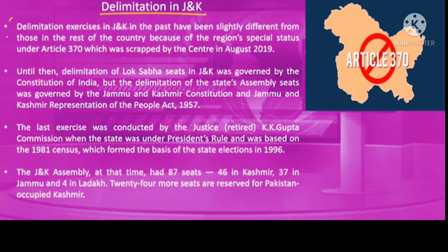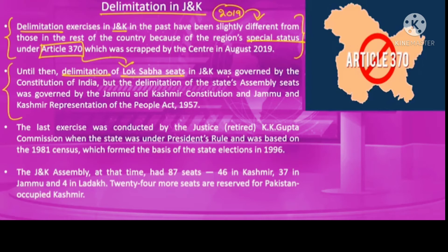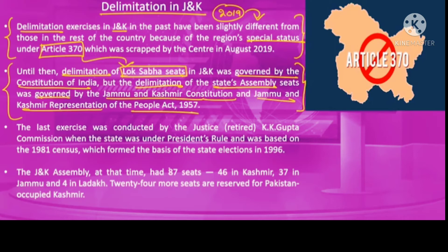Delimitation in J&K before 2019 was slightly different from the rest of India. Prior to August 2019, J&K enjoyed special status under Article 370, and accordingly, the delimitation of Lok Sabha seats was governed by the Constitution of India — similar to the rest of the country. However, delimitation of state assembly constituencies was governed by the J&K Constitution and the J&K Representation of People Act. This anomaly was corrected after the special status was revoked in 2019, making a new delimitation exercise necessary.